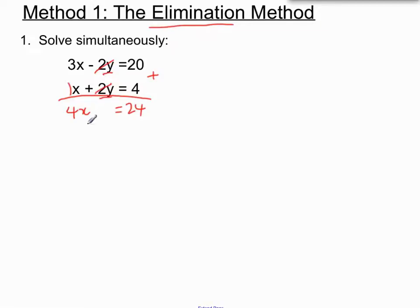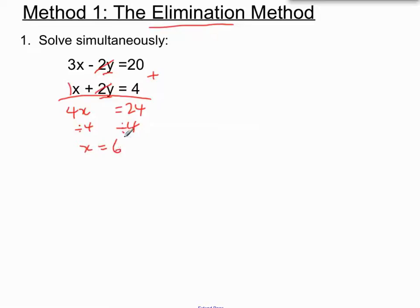We'll just solve the little equation that's left here. So to get rid of the 4, we will divide both sides by 4, leaving us with x equals 24 divided by 4, which is 6.